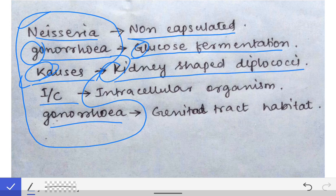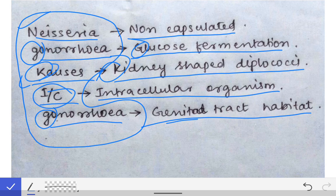It is kidney-shaped diplococci, and 'intracellular' in the mnemonic means it is an intracellular organism. 'Gonorrhea' — the 'G' — means it has a genital tract habitat, so Neisseria gonorrhoeae is an organism of the genital tract.